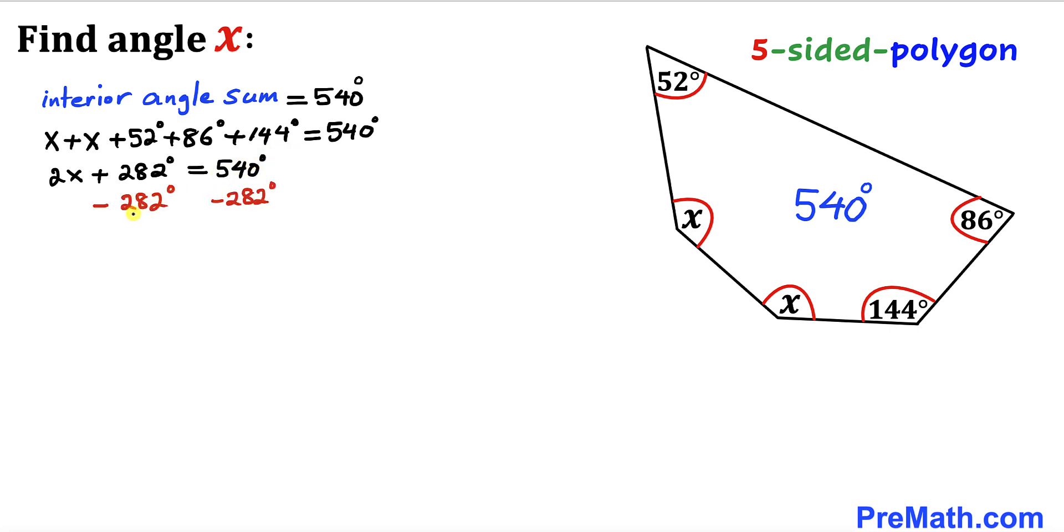Let's subtract 282 degrees from both sides. This is gone. So our angle 2x turns out to be 258 degrees.